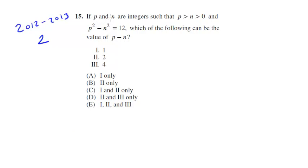So let's look at this. If p and n are integers such that p is greater than n is greater than zero, and p² minus n² equals 12, which of the following can be equal to p minus n?